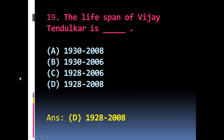Question 19: What is the lifespan of Vijay Tendulkar? The options are A) 1930 to 2008, B) 1930 to 2006, C) 1928 to 2006, D) 1928 to 2008. The right answer is D) 1928 to 2008.